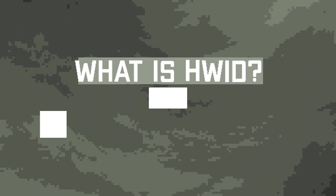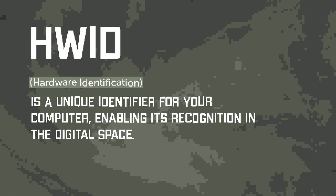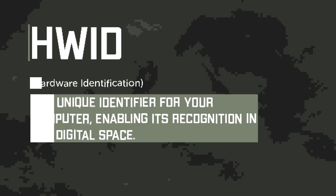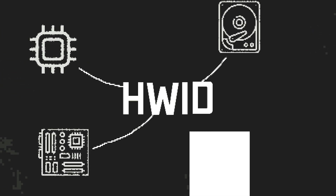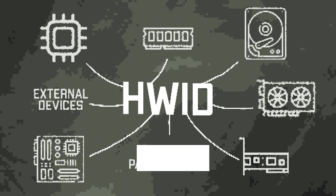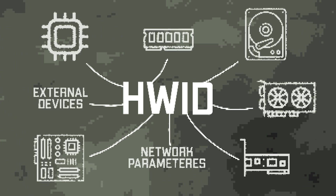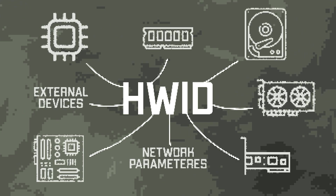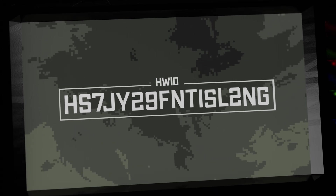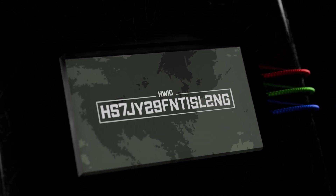HWID, or Hardware Identification, is a unique identifier for your computer, enabling its recognition in the digital space. Usually, HWID consists of a combination of identifiers from components such as the processor, motherboard, hard drive, network adapter, video card, and RAM. In some cases, external devices and network parameters, like MAC addresses or network adapter serial numbers, are also included. This combination ensures a high level of uniqueness, making it possible to accurately identify a device across various security and management systems.